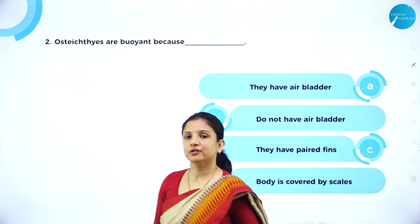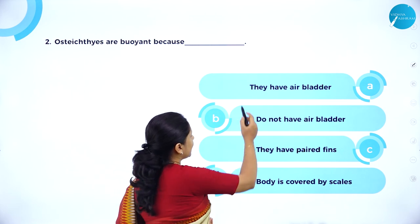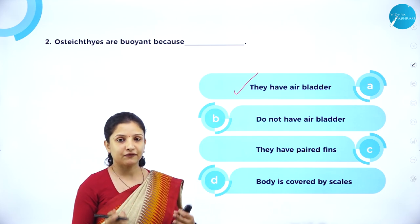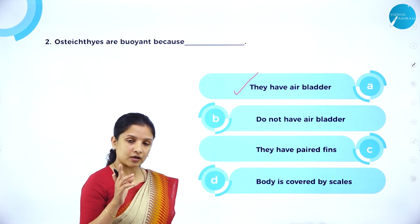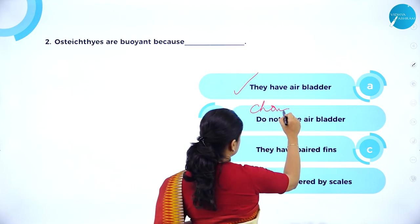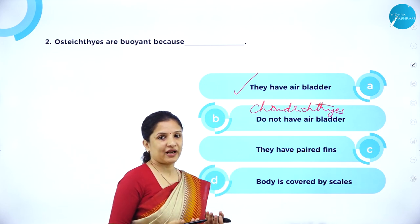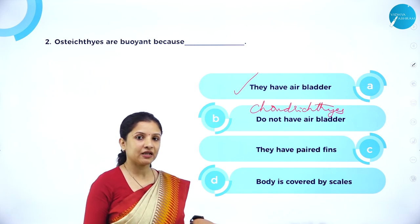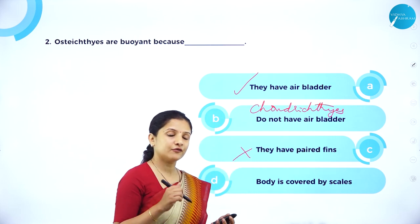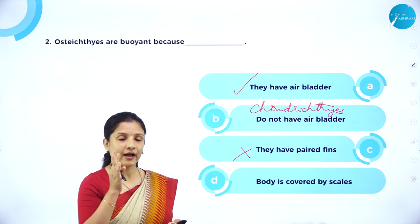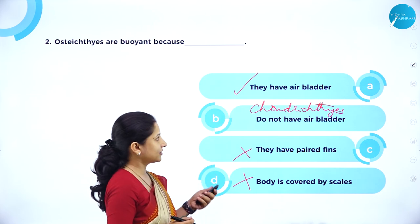MCQ: Osteichthyes are buoyant because they are capable of floating in water. Why? Because they have an air bladder which gets filled with air, giving them the ability to float. So option A — air bladder — is the right answer. Chondrichthyes do not have an air bladder, which is why they must keep swimming to prevent drowning. Paired fins help them swim but if they stop, they would drown. The scales act like a water repellent but have nothing to do with buoyancy.